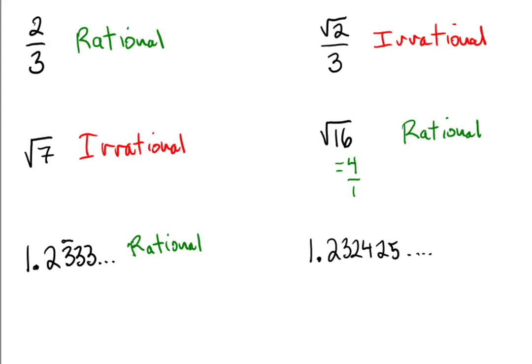So the whole numbers themselves, actually any integer, is also rational, because you could just place it over 1, and you would see that it could be written as a ratio of integers.